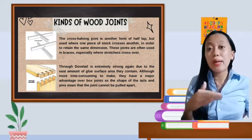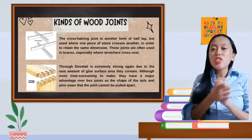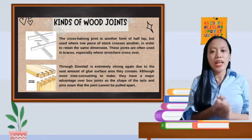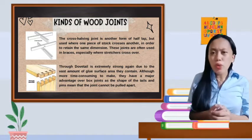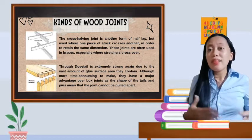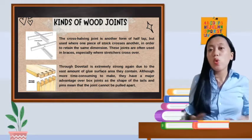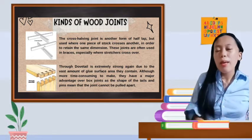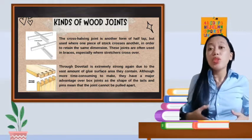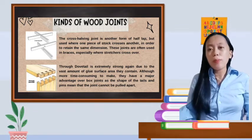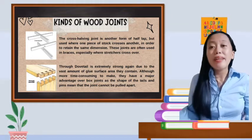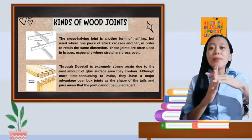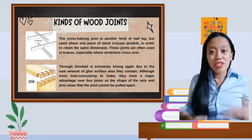Let's proceed to true dovetail joints. Extremely strong again due to the vast amount of glue surface area they contain. Although more time-consuming to make, they have a major advantage over the box joints as the shape of the tails and pins mean that the joint cannot be pulled apart. Here, it will have tails and pins to work together and reconnect.